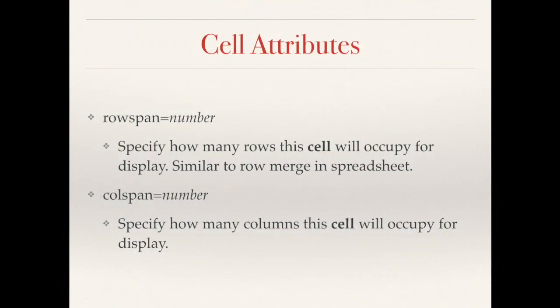For the second table, we want to use the rowspan and colspan attributes to merge cells. Both rowspan and colspan are attributes on the td and th tags. Rowspan specifies how many rows a cell occupies, and colspan specifies how many columns a cell occupies. When you use rowspan and colspan, you need to count how many cells you need to adjust in subsequent rows. You will see what I mean in the demo.